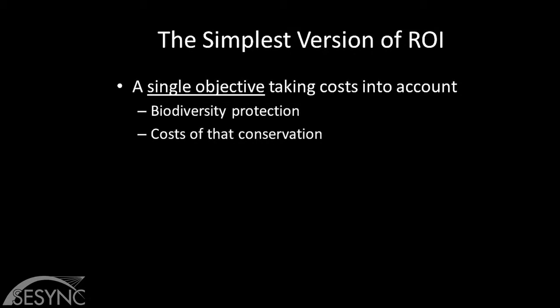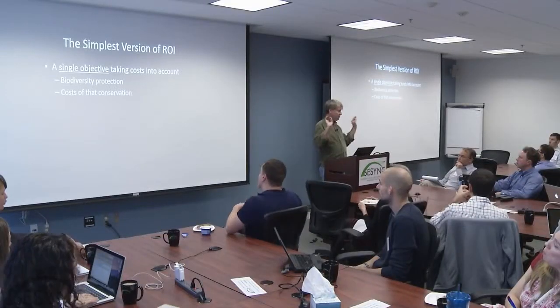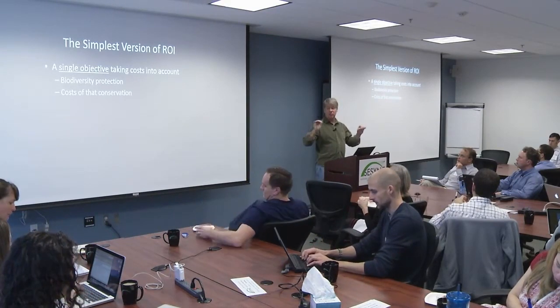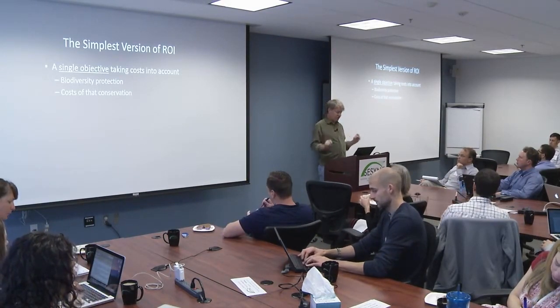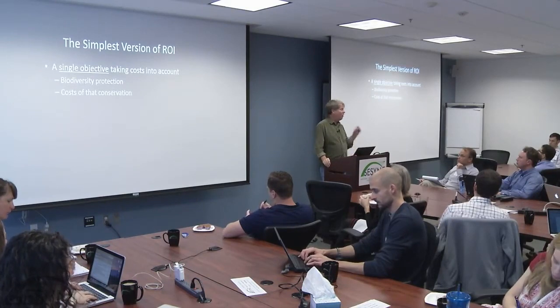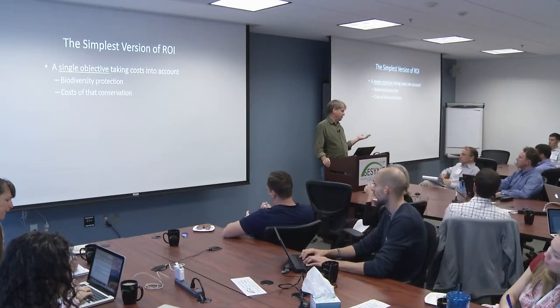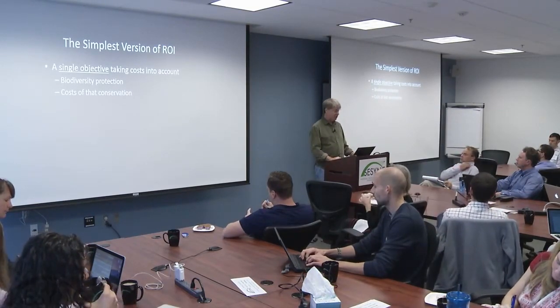I'm going to start with the simplest possible version of this return on investment idea. All we're doing is thinking about a single objective. The most common one in the conservation community going back decades is biodiversity protection and enhancement. So it's a single objective — imagine for the moment we have a good way of measuring that, which is going to be an interesting thing to talk about. The only thing we're going to add is thinking about the costs of achieving protection and conservation.